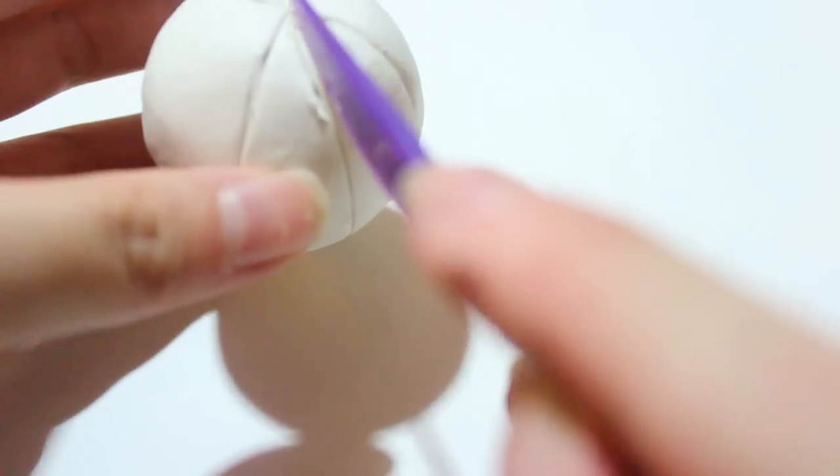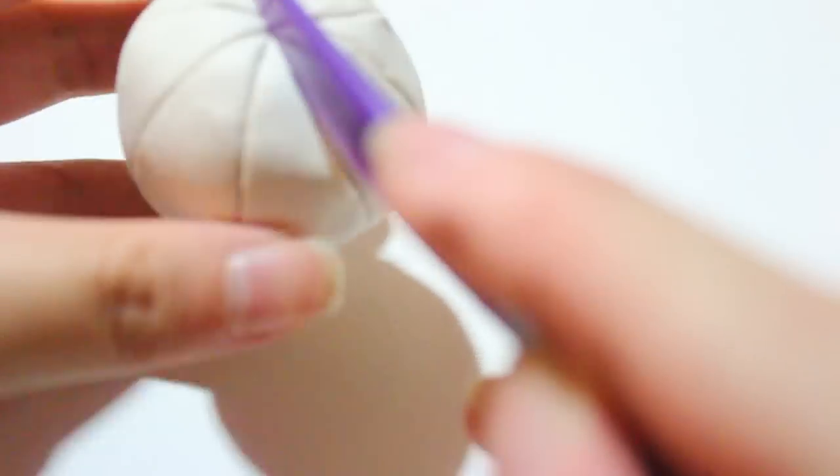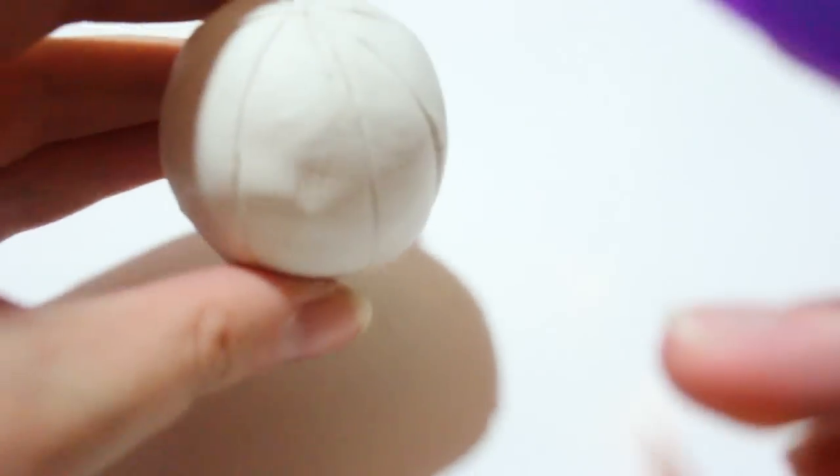I did this four times so I think it created eight equal slices on the pumpkin. Sorry, can't do math apparently. At the end this is what your pumpkin should look like.